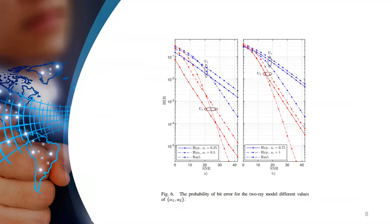This figure shows the bit error rate of two users for different values of mixing coefficient A, and it also compares the performance of hyper-Rayleigh channel with the standard Rayleigh channel. And as can be seen from this picture,